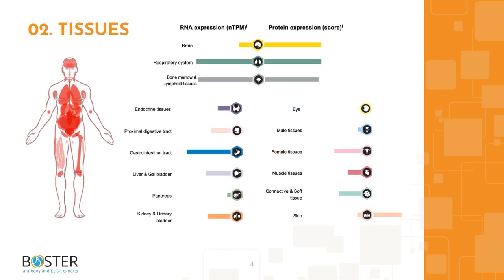Where is CD68 expressed? It is highly expressed by monocytes, particularly macrophages. CD68 protein expression can be found in the brain cerebellum, lungs, and spleen. Lower levels of CD68 expression may occur in the bone marrow, skin, lymph nodes, and more. For more information, visit proteinatlas.org to check out which cell lines express CD68. This information may be useful for designing positive and negative controls for western blot and immunohistochemistry.